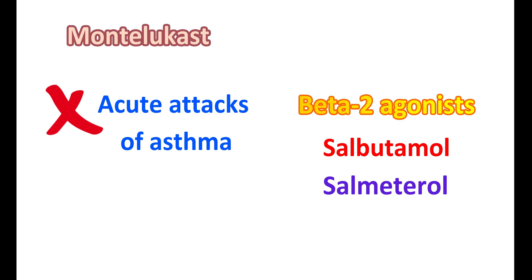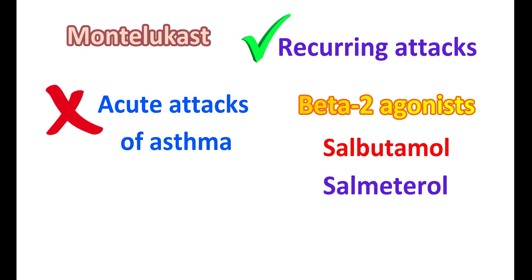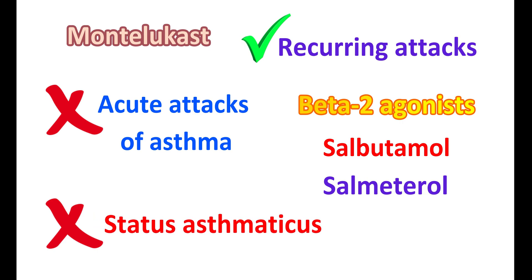Montelukast reduces the inflammation underlying the development of asthma, thereby preventing recurring attacks. That is why Montelukast can be used for prophylaxis, where it reduces the number of asthmatic attacks. Similarly, this medication is not suitable for emergency conditions like status asthmaticus — a condition of excessive bronchospasm — where again Montelukast is ineffective because it is not a direct bronchodilator. In such situations, beta-2 agonists should be used.